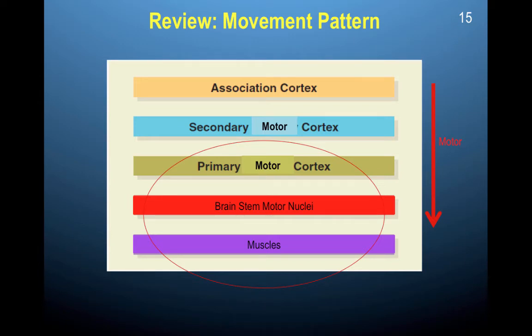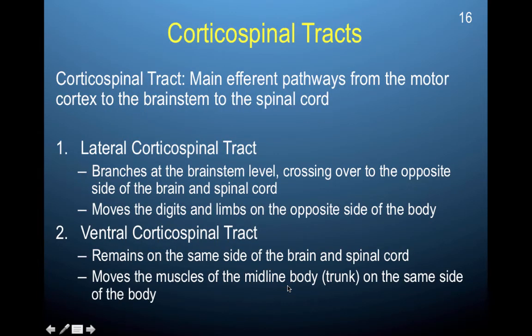Now that we've talked about movement organization within the motor cortex, we're going to move down to how motor information is organized as it exits the brain. When motor information leaves the brain, it travels down the spinal cord via one of two corticospinal tracts. Corticospinal tracts are the main efferent pathways from the motor cortex to the brainstem to the spinal cord — and remember, efferent means exit. First, we have the lateral corticospinal tract.